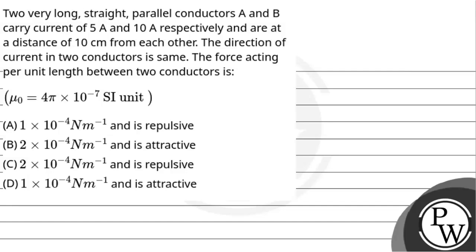Hello, let's hear our question. The question says two very long straight parallel conductors A and B carry current of 5 ampere and 10 ampere respectively and are at a distance of 10 cm from each other. The direction of current in two conductors is same. The force acting per unit length between two conductors is.